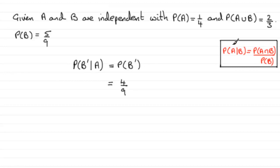The alternative way is to use the conditional probability formula, which you generally find in most formula books. The A's and B's in that formula are not necessarily the same A's and B's we have here, but it's a concept you ought to be aware of. The probability of one event given another is exactly the same as the probability that both events occur divided by the probability of the given event.